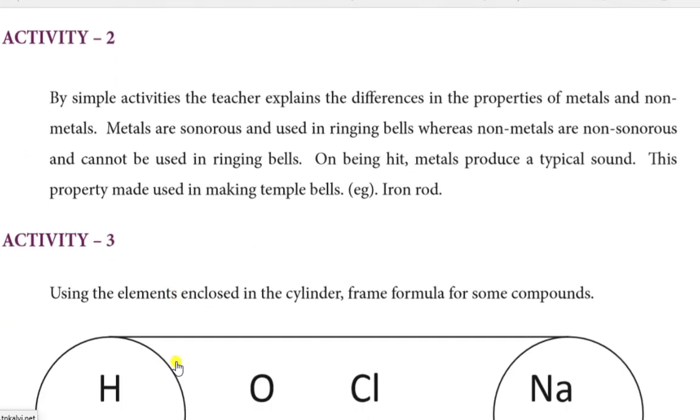Coming to the next activity, we can easily differentiate metals and non-metals. There is an important property - the sonorous nature. Metals can be struck and produce vibrations, whereas non-metals are non-sonorous. In these two properties, we can differentiate metals and non-metals.